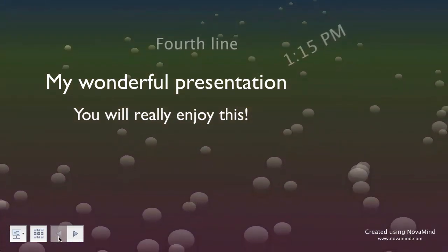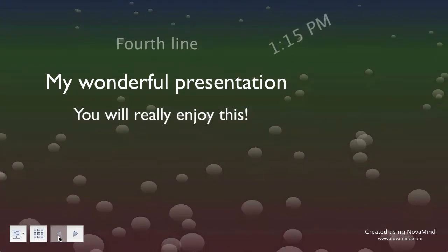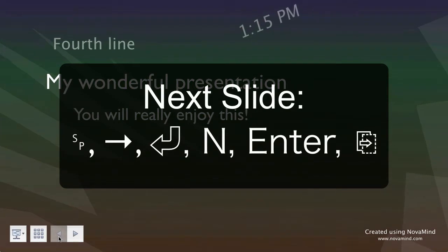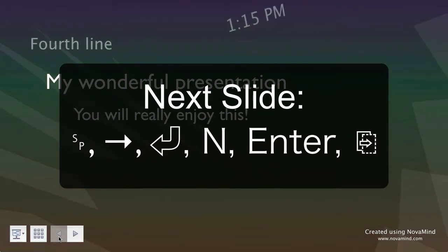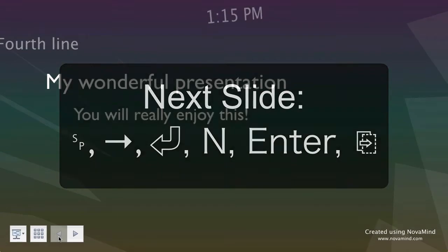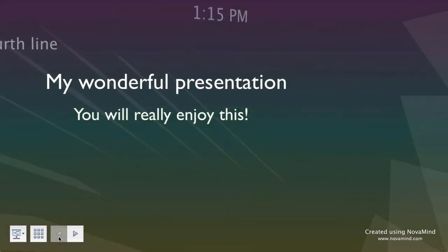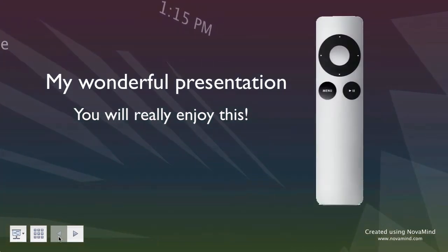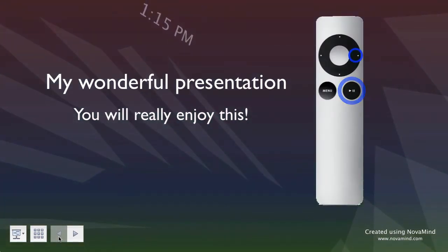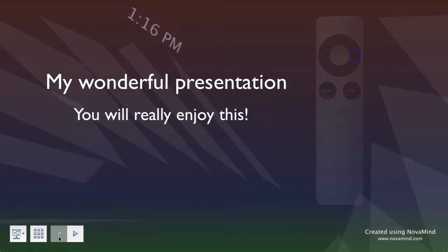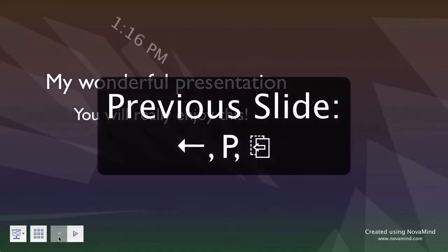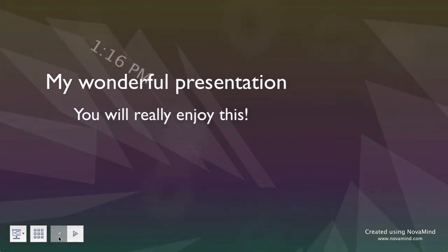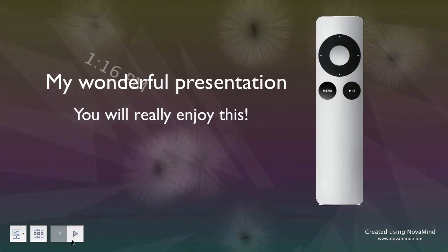The other two buttons are for going to the next or previous slide. Using the keyboard you can press the space bar, right arrow, return, enter, or page down to go to the next slide. Using the mouse you can click on the slide being displayed or the right arrow button on the controls. Using the Apple remote you can click the play/pause button or the forward button. To go to the previous slide using the keyboard press the left arrow, P, or page up. Using the mouse click the left button on the controls, and using the Apple remote use the rewind button.